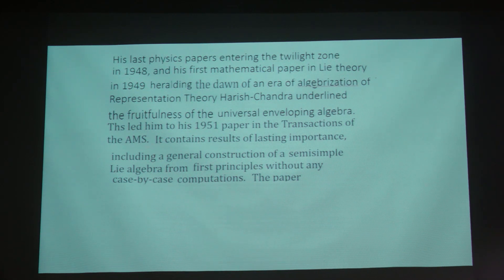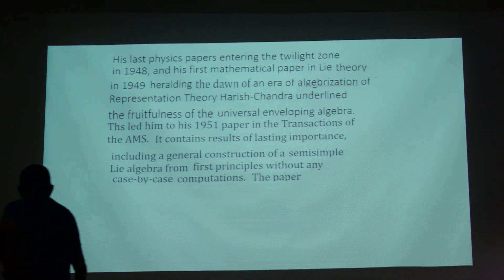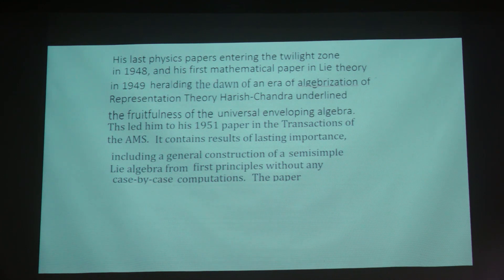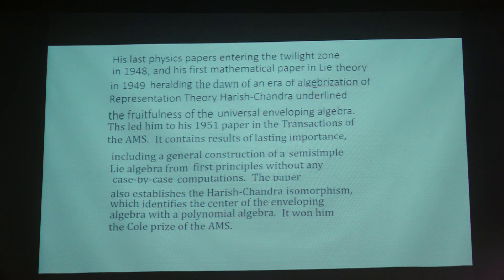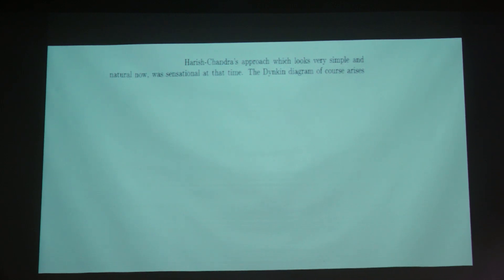The paper includes a general construction of a semi-simple algebra from first principles without any case-by-case computations. The paper also establishes the Harish Chandra isomorphism, which identifies the center of the enveloping algebra with a polynomial algebra. It won him the gold prize of the AMS. Harish Chandra's approach, which looks very simple and natural now, was sensational at the time.